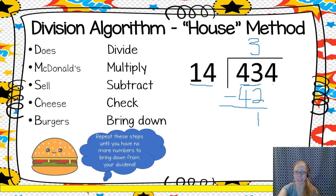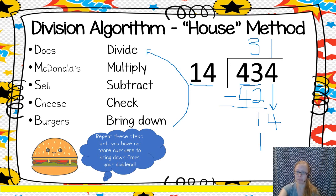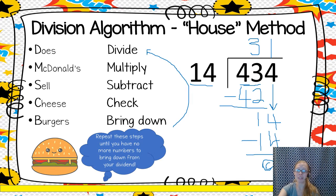My next step, B, is bring down. I bring down the next number that's ready to be divided, then I start the process over. I divide: 14 divided by 14 — that is 1. I'll put it up top. I multiply: 1 times 14 is 14. I write it underneath. I subtract: 14 minus 14 equals zero. I check — zero is definitely less than 14 — and there's nothing else to bring down. So 31 is my quotient. That is the division algorithm.